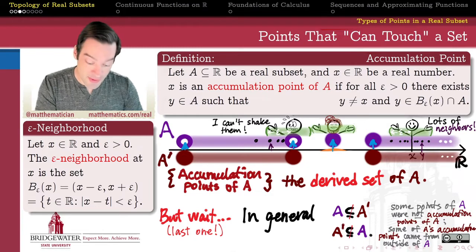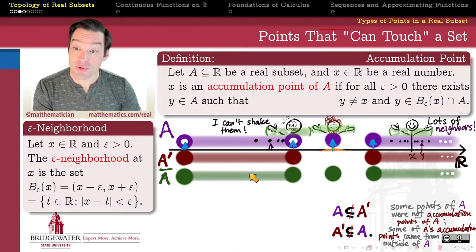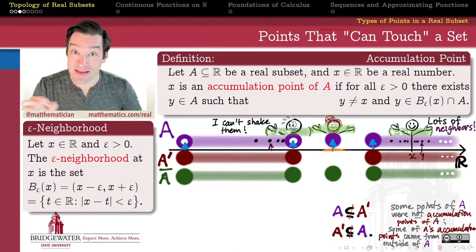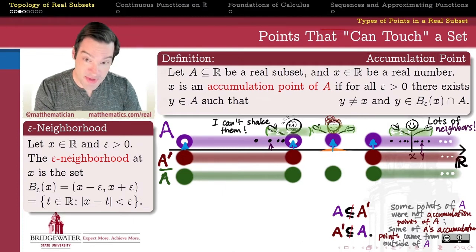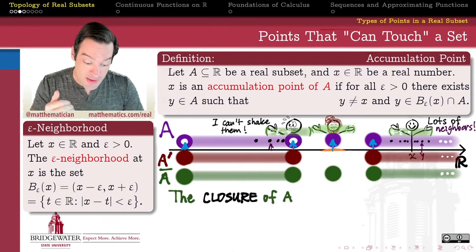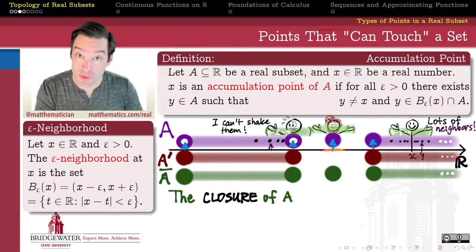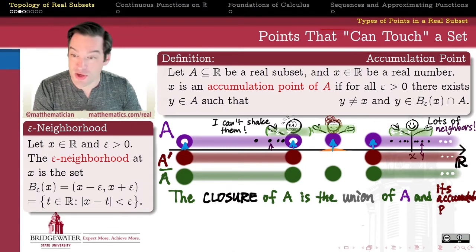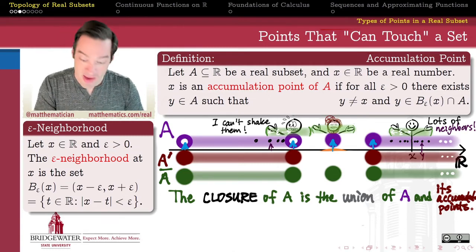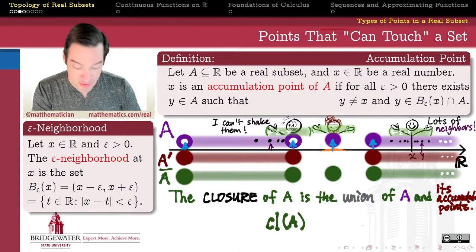We want a nicer notion with a clear subset relationship. So we smush A and its accumulation points together to get a new set that always contains A as a subset and which also contains all of A's accumulation points. We call this the closure of A. The closure is the smallest superset of A that also contains the derived set. We take the union of A and its derived set — either written as CL(A) or with a line drawn over A.